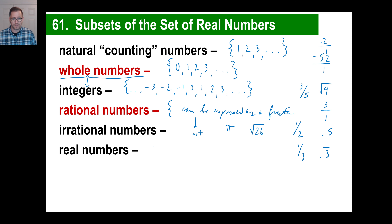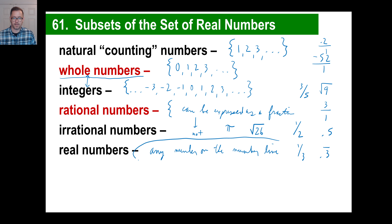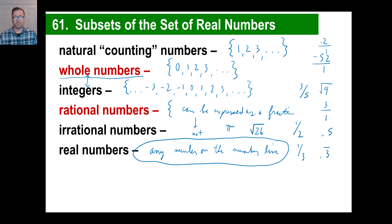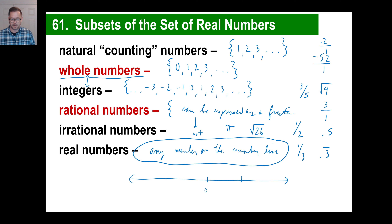Real numbers are defined as any number on the number line. There's the zero. Any number on a number line — here, there, anywhere — is a real number. We'll get to imaginary numbers in Algebra 2, but a real number is anything at all that you can place on a number line.